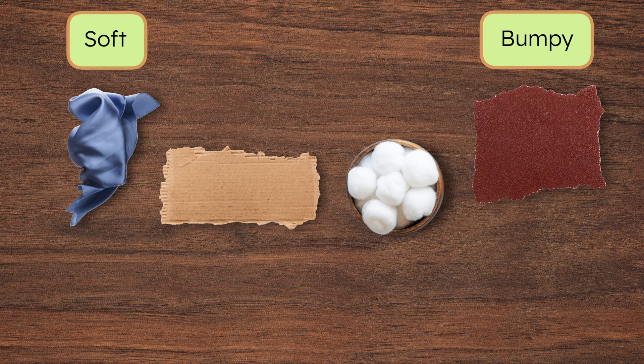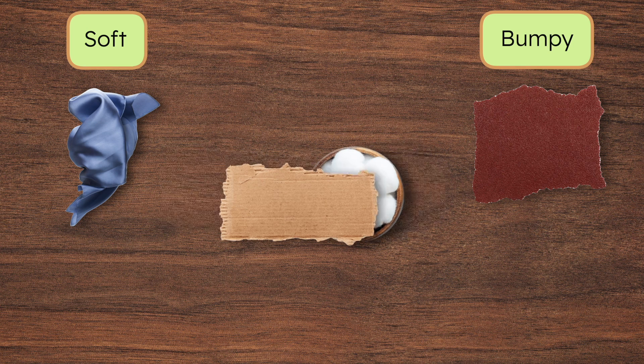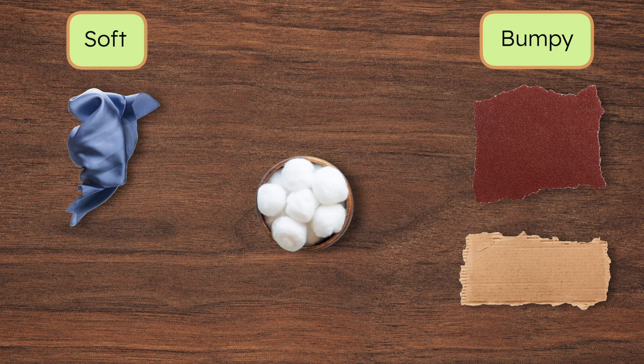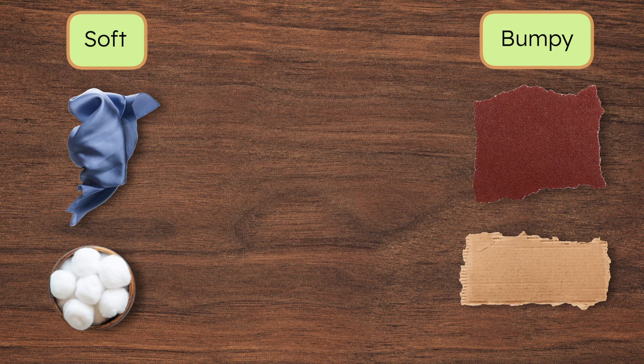Can you help me figure out where each one goes? What about this cardboard — bumpy or soft? Right, it's bumpy. Let's keep going. What about these cotton balls? They can be sorted with the soft materials, since they're light and fluffy. Great, we're making progress. We got all of the collage materials sorted.